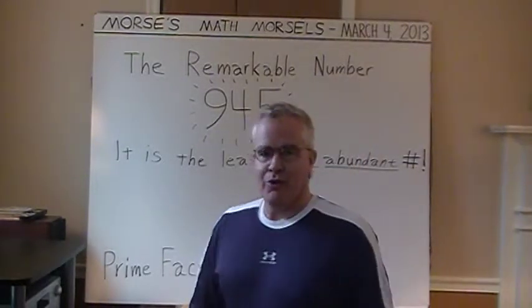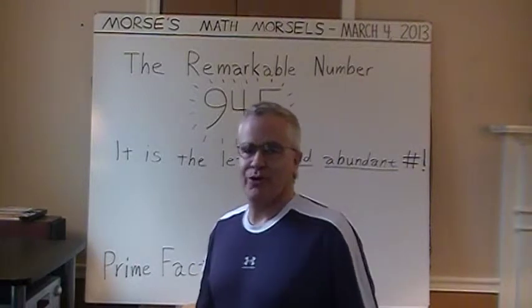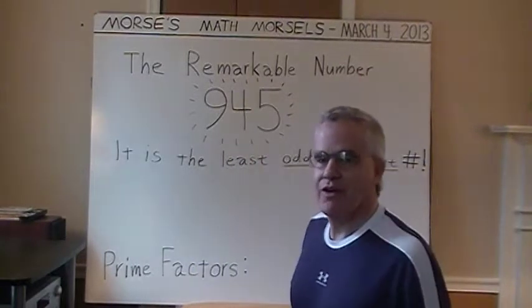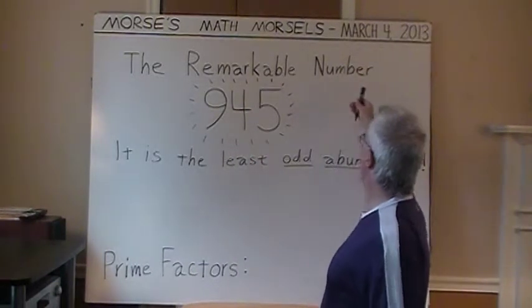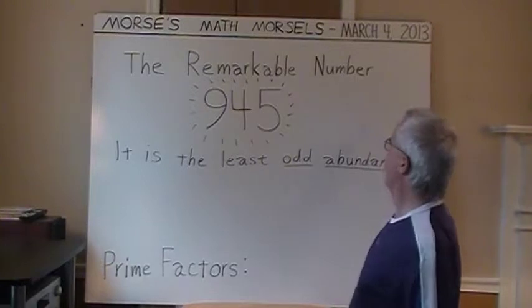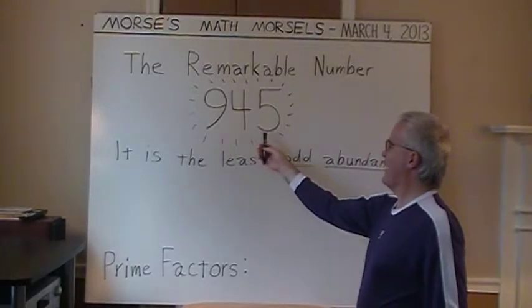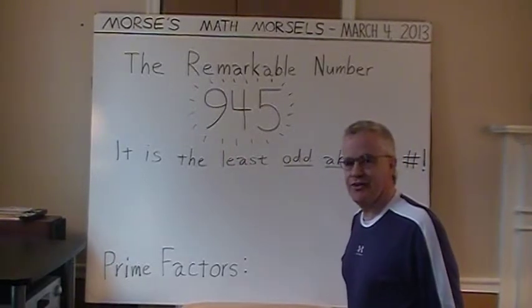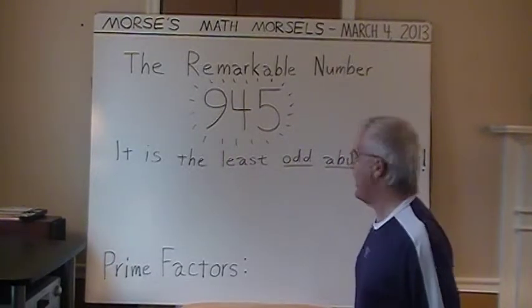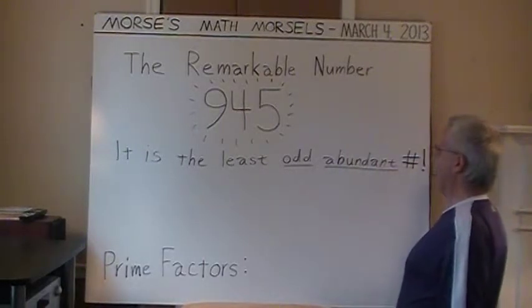Hello and welcome to Morse's Math Morsels. Introducing the remarkable number 945 — it is the least odd abundant number.